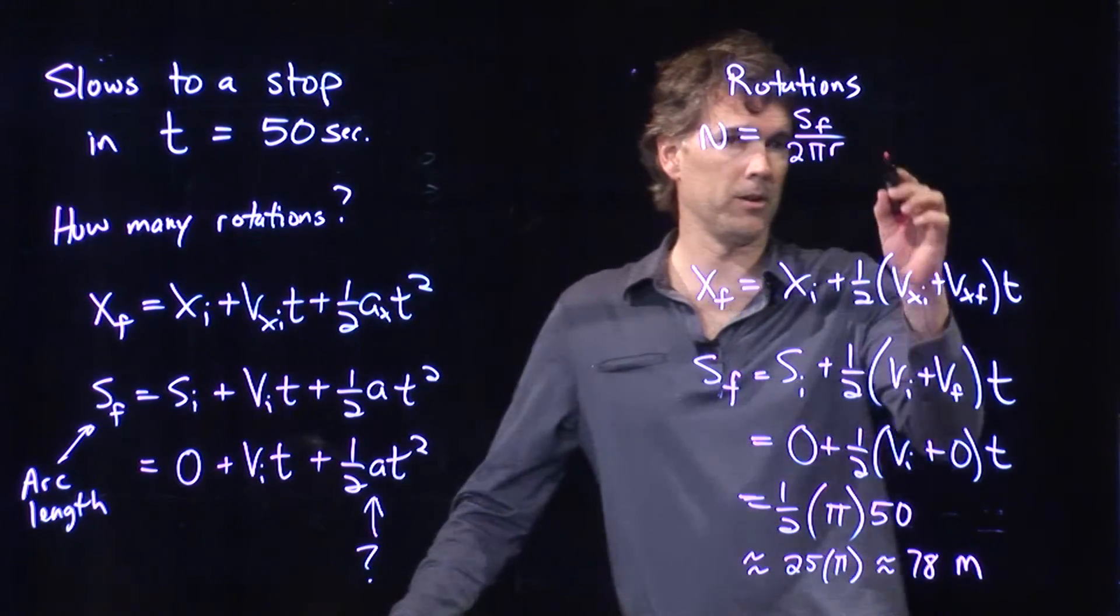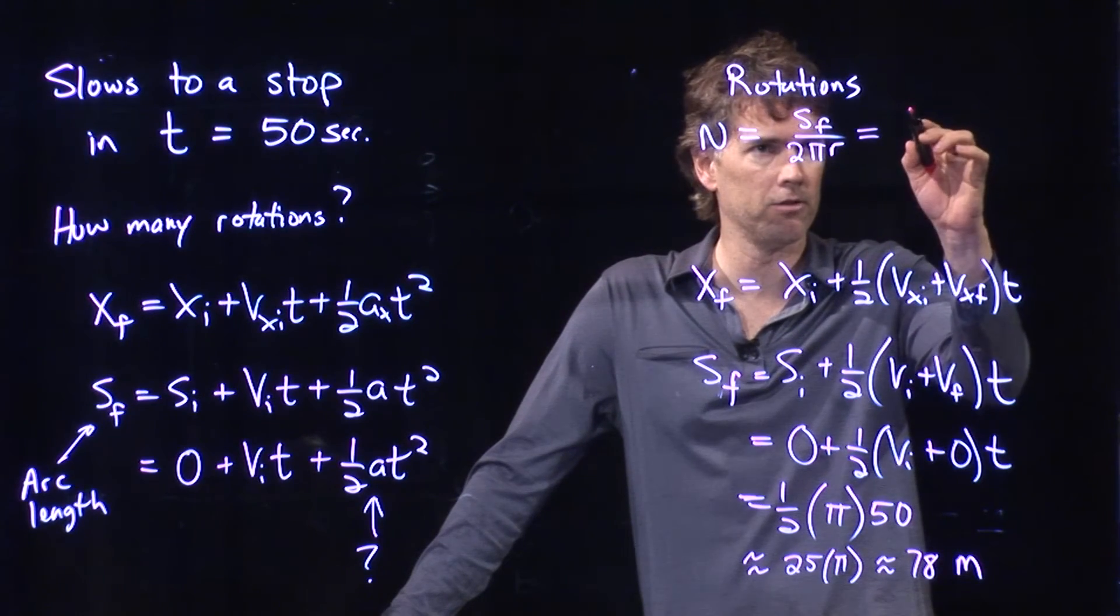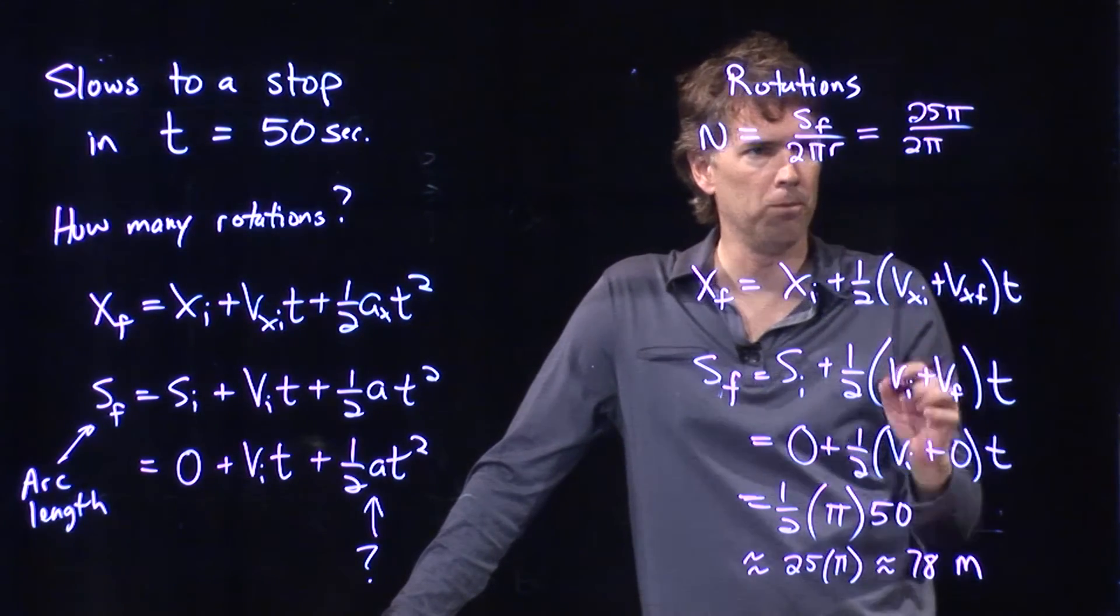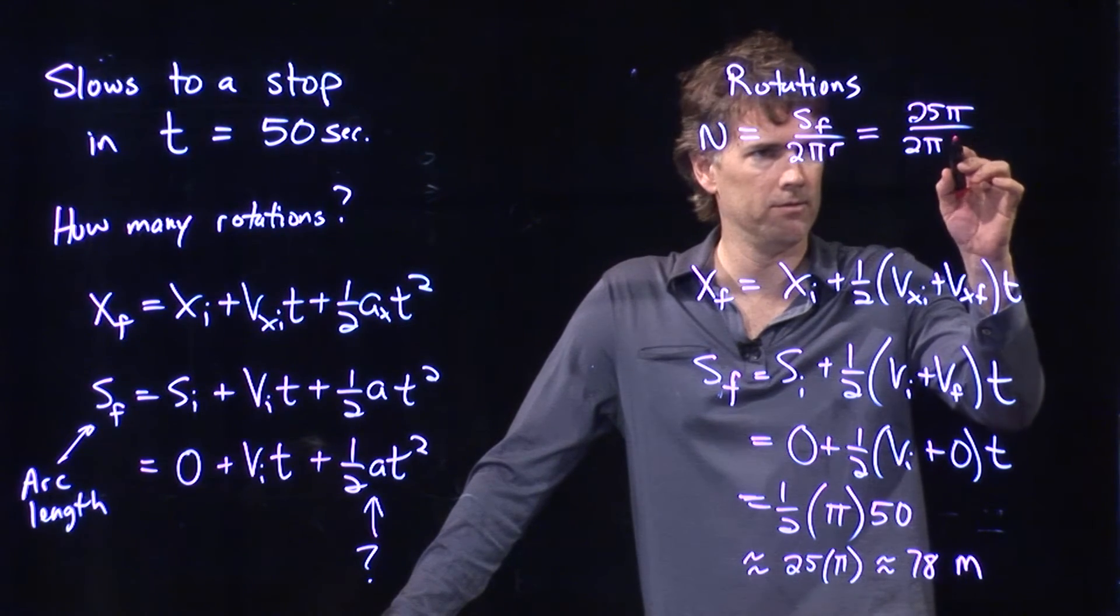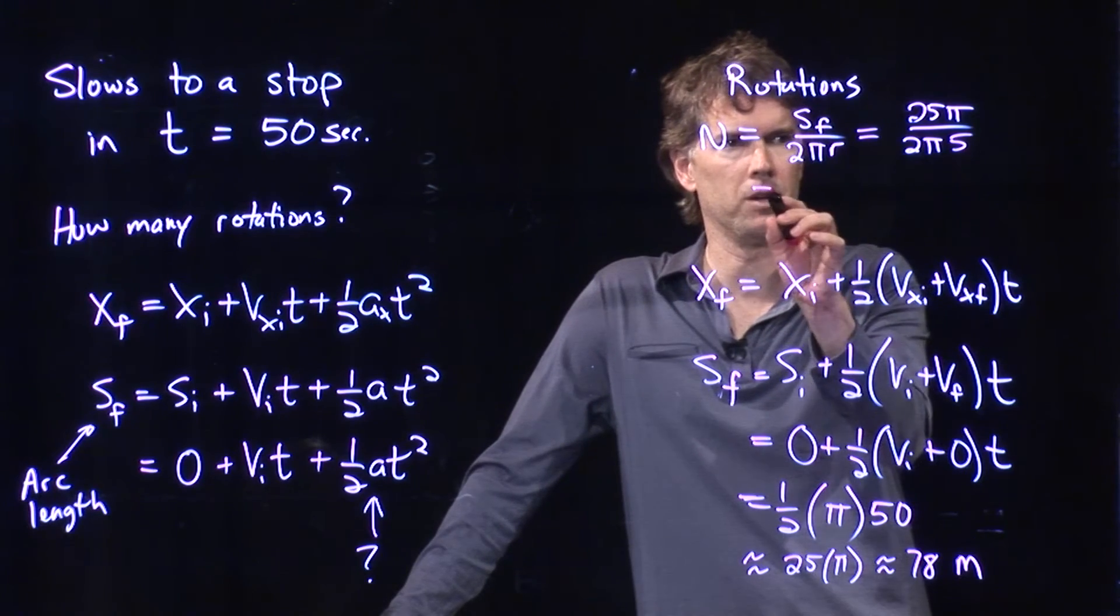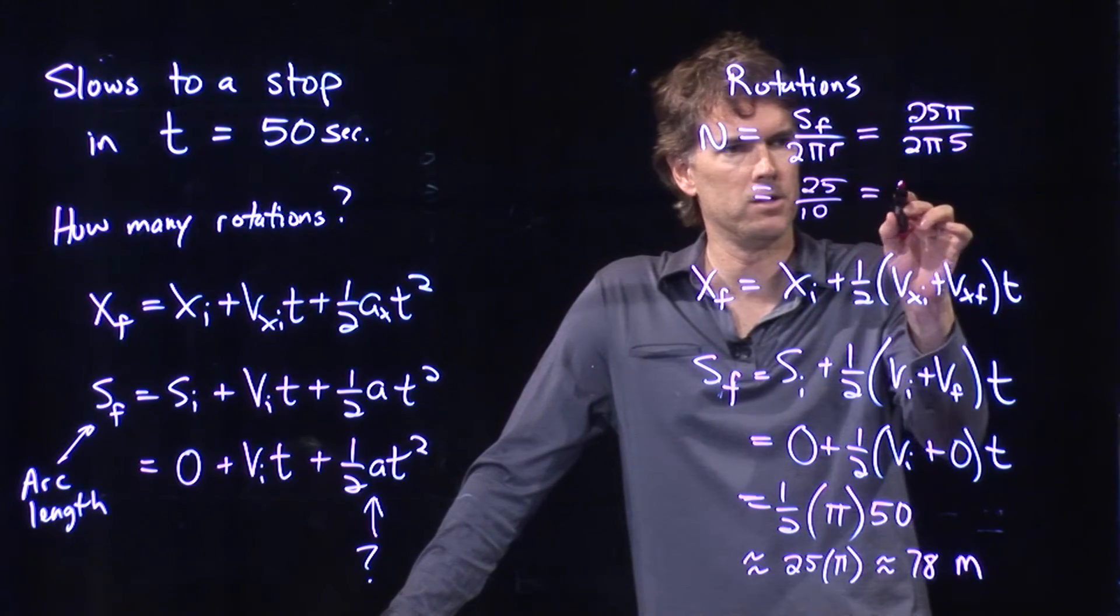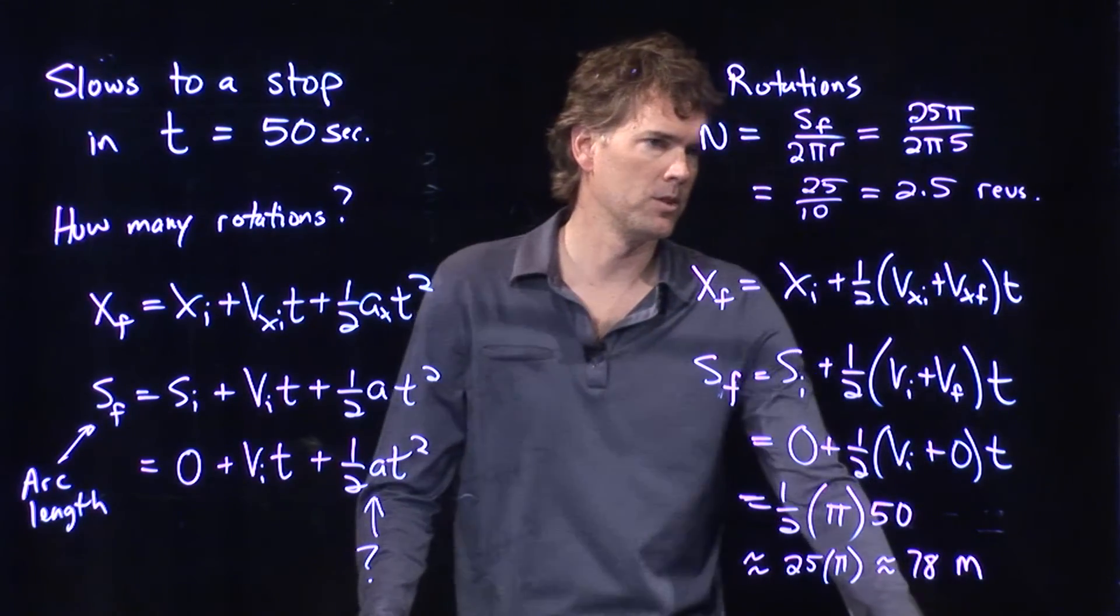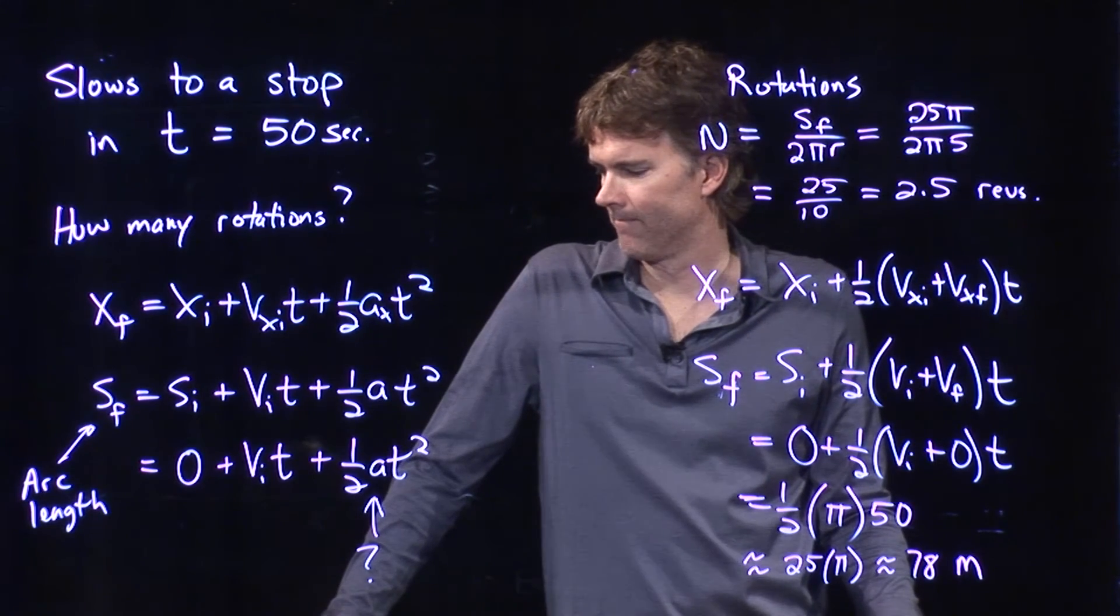And now look what something really exciting happens because we had those interesting numbers. sf is 25π, and here we have 2π times the radius, what did we say the radius was? Five meters. So this becomes 25 over 10 which is 2.5, two and a half revolutions and then you come to a stop.